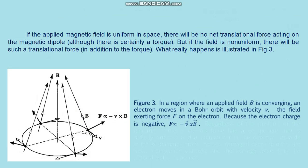If the applied magnetic field is uniform in space, there will be no net translational force acting on the magnetic dipole—there is certainly a torque, but if the field is non-uniform there will be a translational force in addition to the torque. This situation is illustrated in figure three.